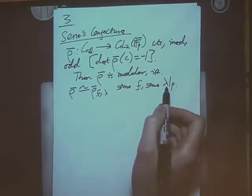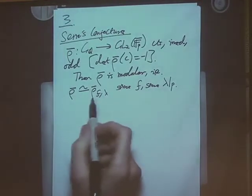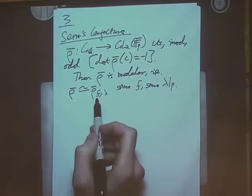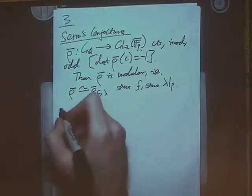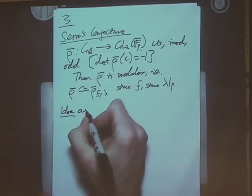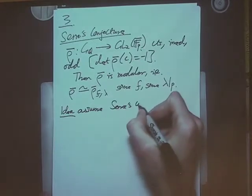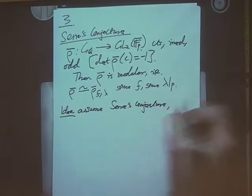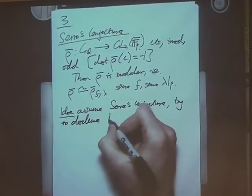Lambda was just a prime of the coefficient field of f. And if I was being slightly more careful, this Galois representation is probably defined to be valued in a finite field, but of course you can just extend scalars to F_p-bar. So that's Serre's conjecture, and then the idea of modularity lifting theorems was to kind of assume Serre's conjecture and try to deduce this Fontaine-Mazur conjecture.